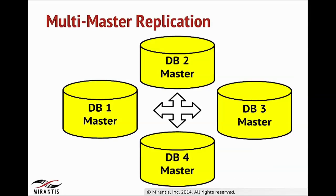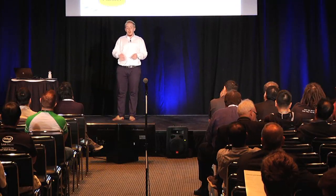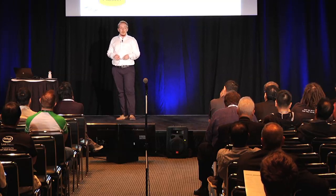The second use case is multi-master replication, where each master can accept read-write operations. And the last use case is multi-master-slave replication, when we have a lot of masters and they have a common slave. The common slave is used to receive the replicated data from each of the masters, and masters can be connected to each other or not.